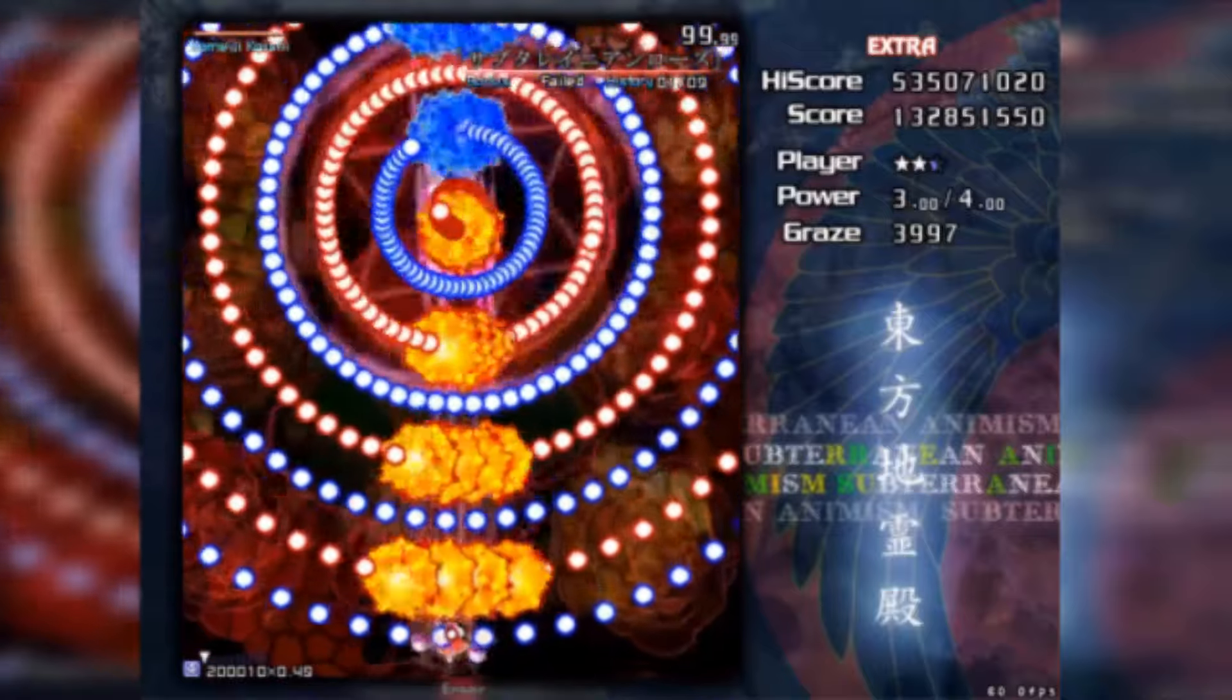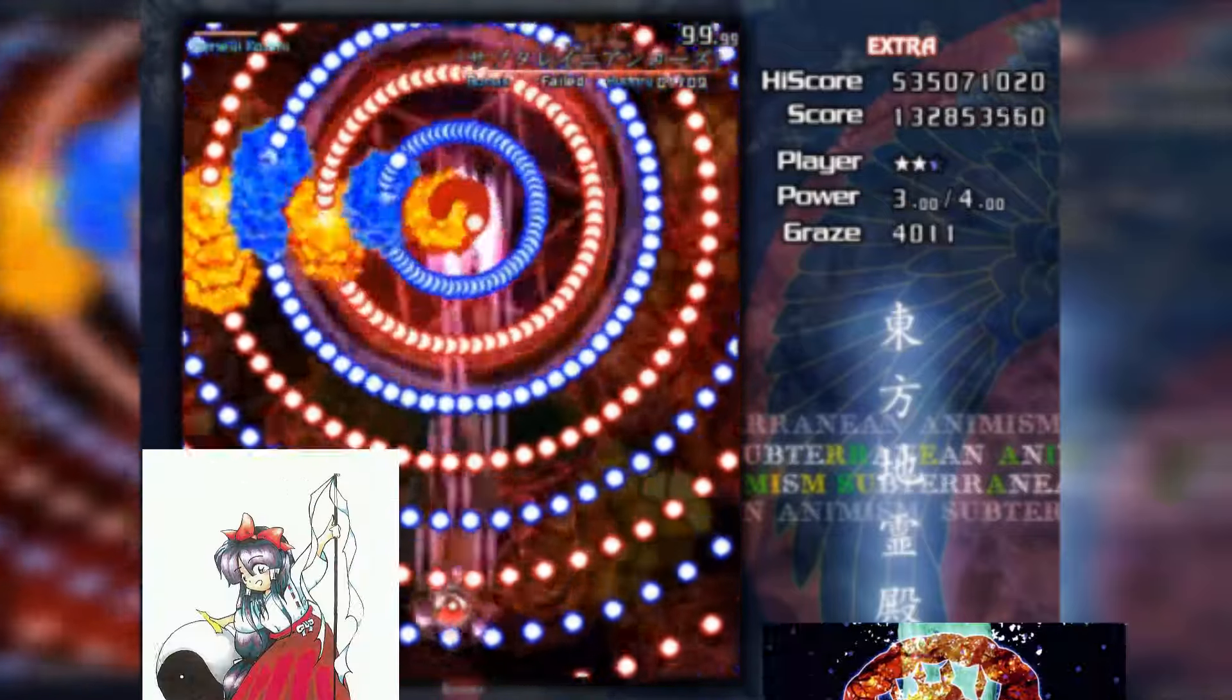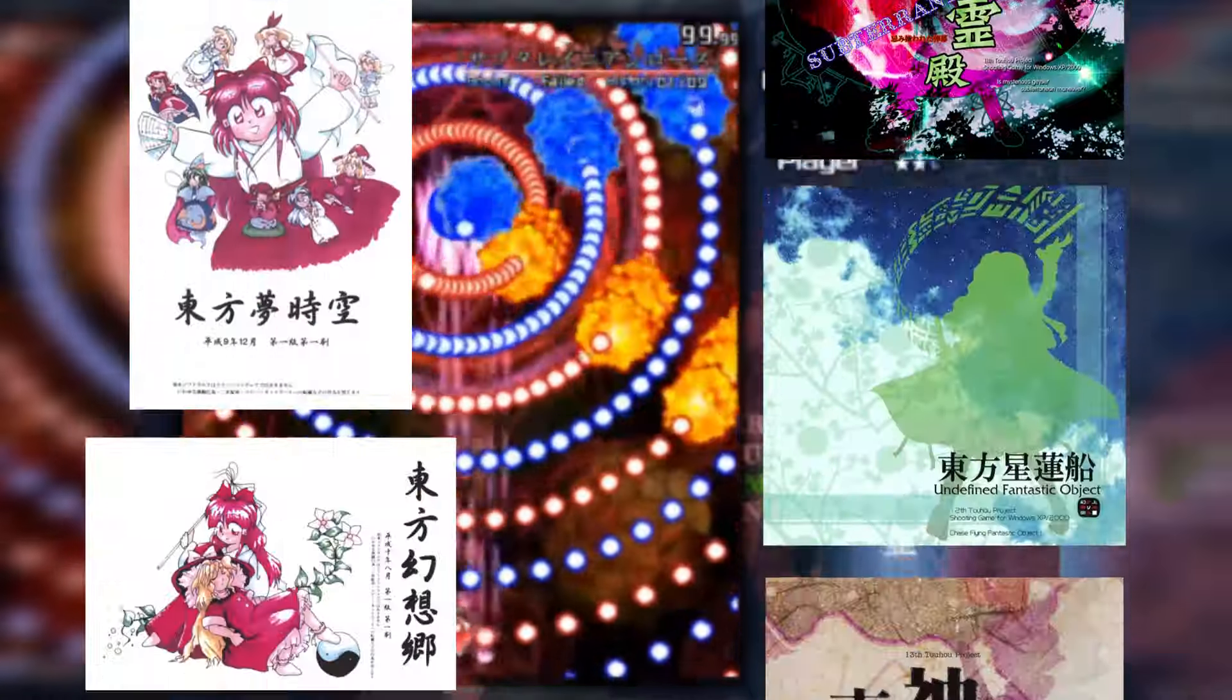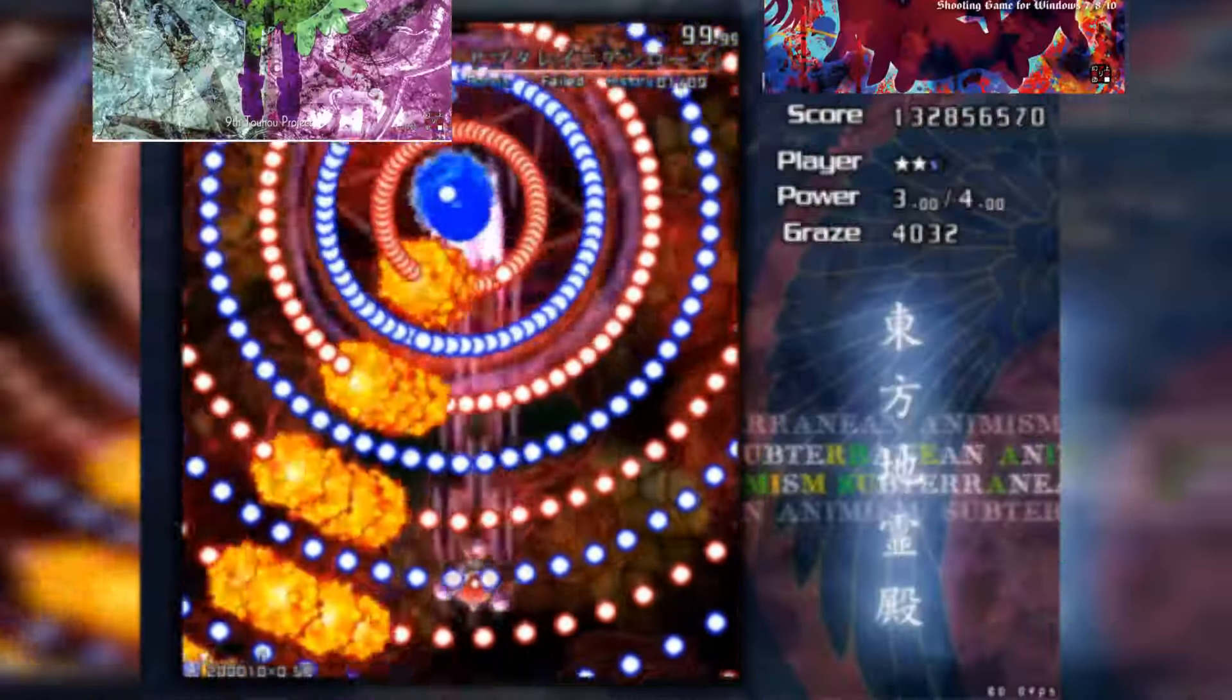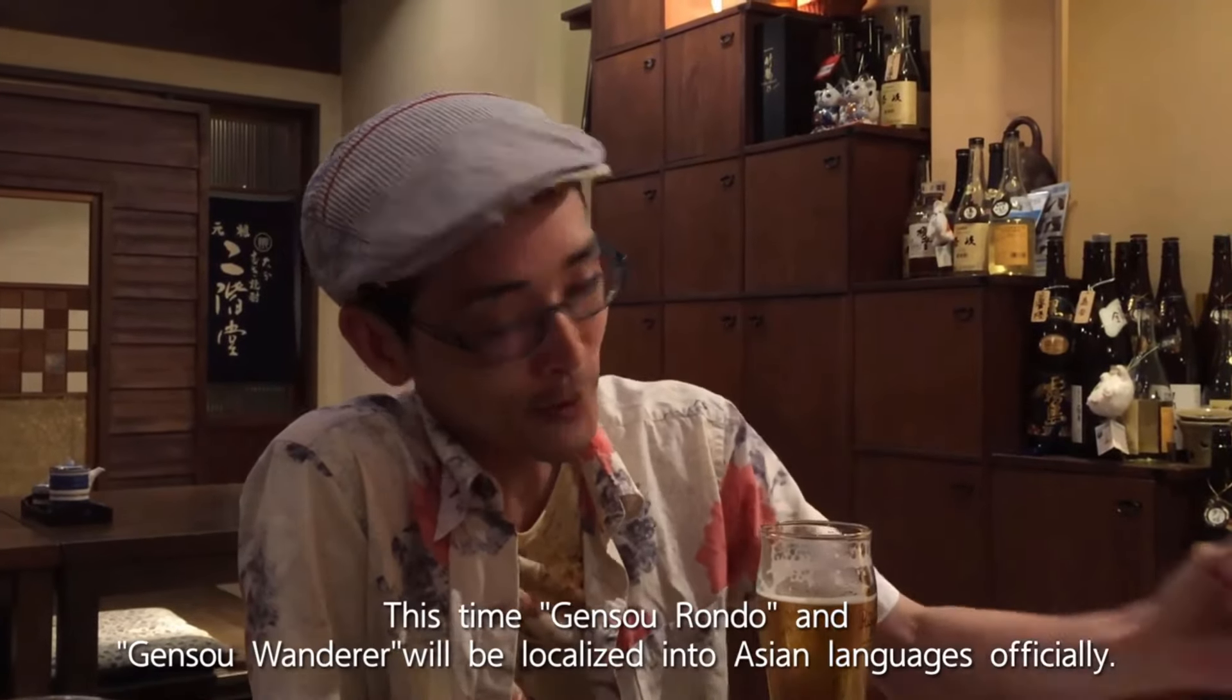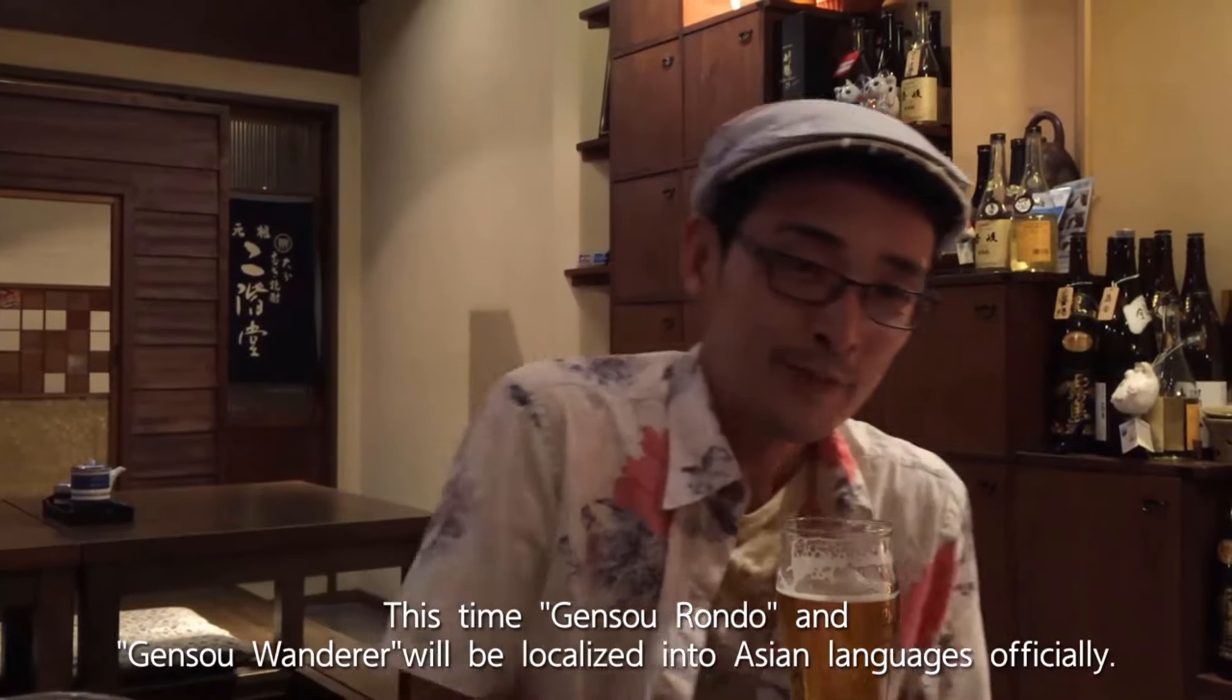The Toho Project has got to be the longest running series of games developed by one person, with 17 mainline installments of the Anime Girl Bullet Hell shooters released in just over 20 years. These games are developed entirely by one guy who goes by the handle ZUN, from the art to the programming to, of course, the music.